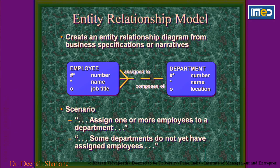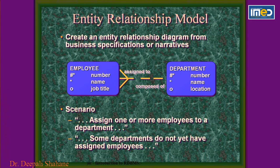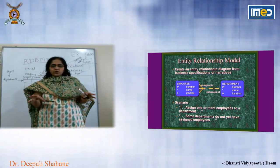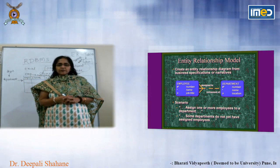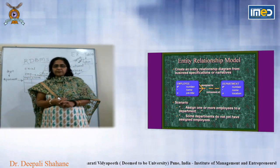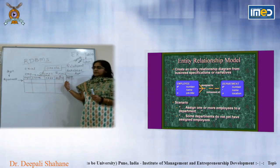When we are talking about the data model related to RDBMS, ER diagrams or ER model is the basic model used to create an entity relationship diagram from the business specifications or narratives. We need to understand the requirements from clients first. Data will be divided into different categories and these categories are called entities. An entity relationship model is an illustration of various entities in a business and the relationships between them.